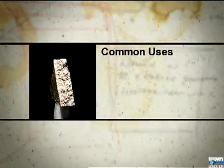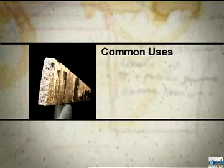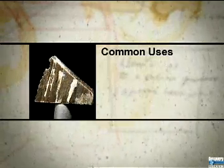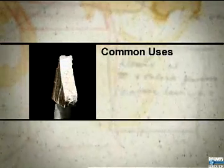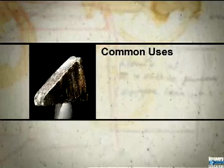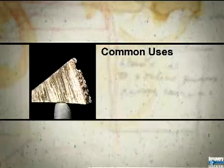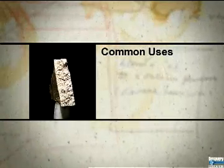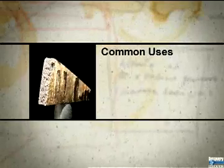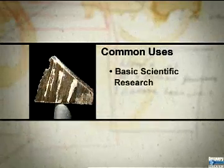Francium is one of the rarest naturally occurring elements and the most unstable of the first 101 elements on the periodic table. Due to the very small amount and extremely short half-life of francium, it has no current use outside of basic scientific research.